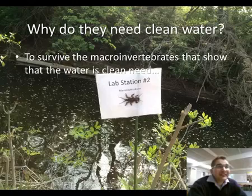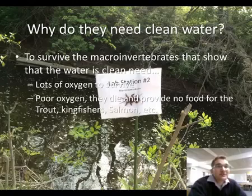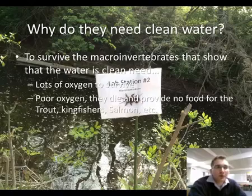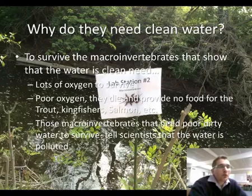These indicator species need lots of oxygen to survive. If there is poor oxygen, they typically die if they are an indicator species, and so they do not end up providing food for trout, kingfishers, salmon, or many other organisms found in the bodies of water. There are some macroinvertebrates that need poor or dirty water to survive, and so that tells scientists that the water is polluted.